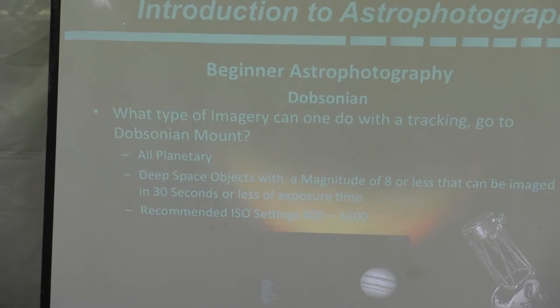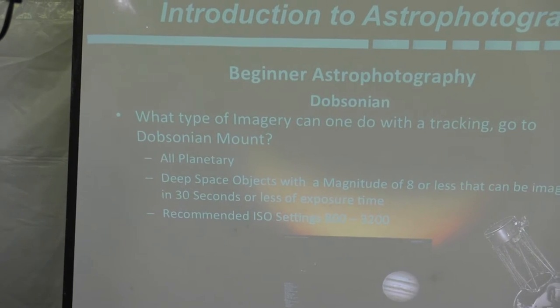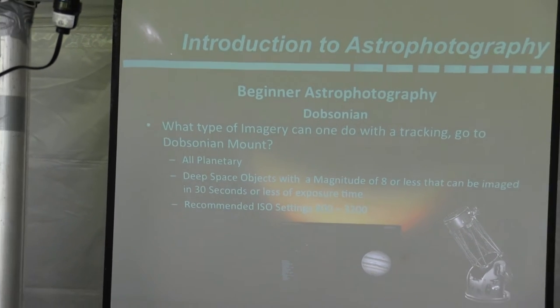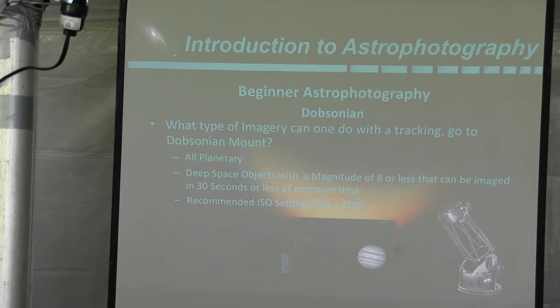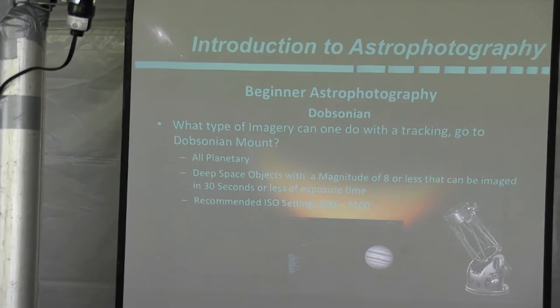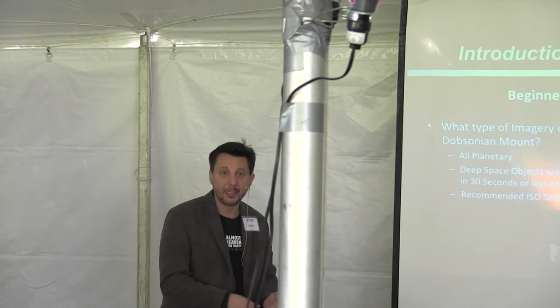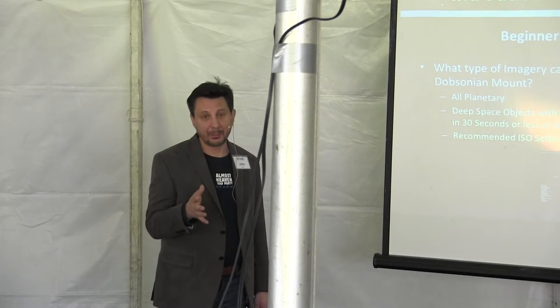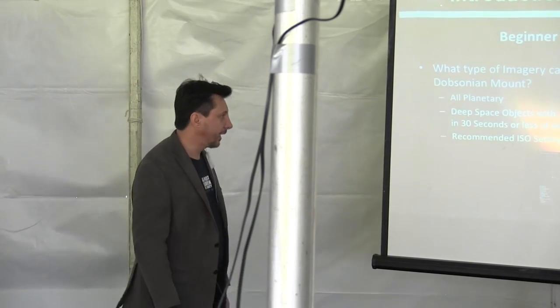One of the challenges with a Dob is where that focal point is in relation to the eyepiece. A lot of people, when they get a camera and they're going to use their Dob, find out that they can't get the focal point of the camera to hold it on there. Where the focal point is presented on a Dob is quite often really close up to the Dob, and you can't get the focal point of the sensor to go there.